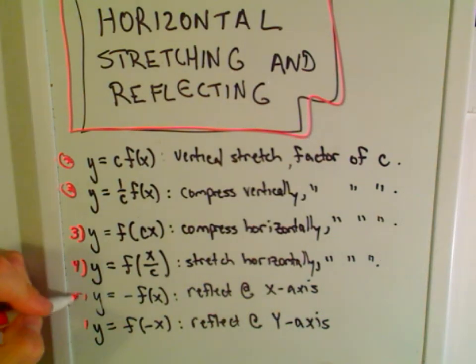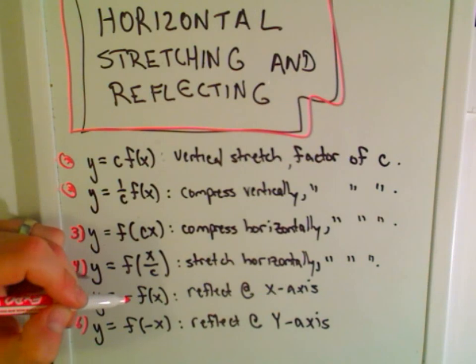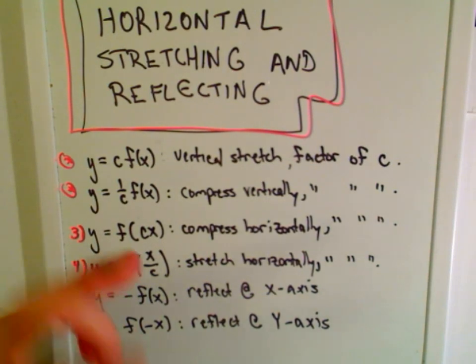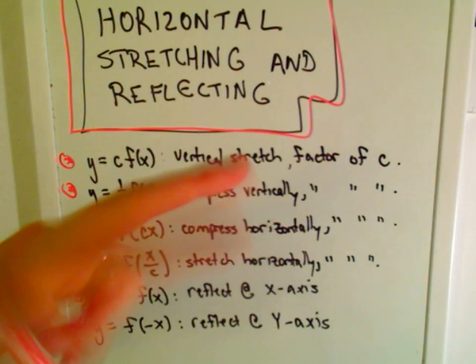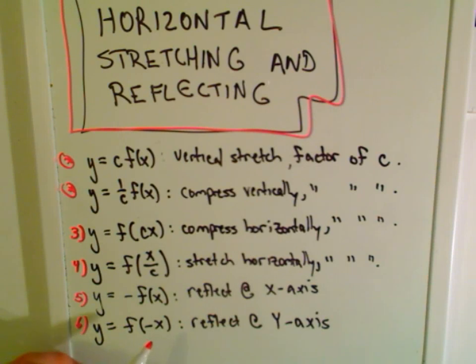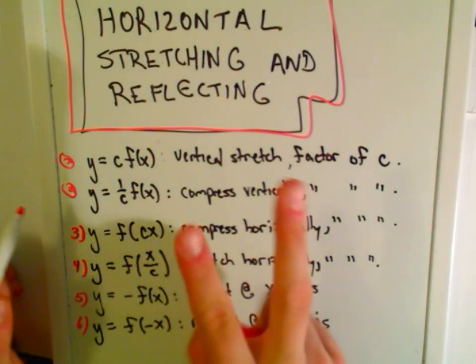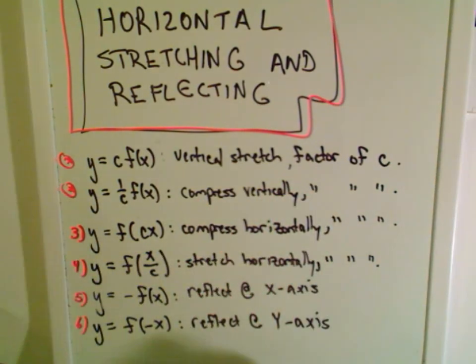The last two conditions: if you multiply out front by a negative number, it flips the graph about the x-axis. And if you plug a negative inside, you flip it about the y-axis.